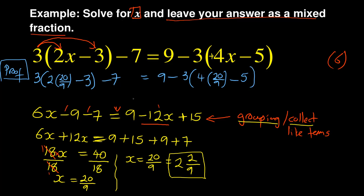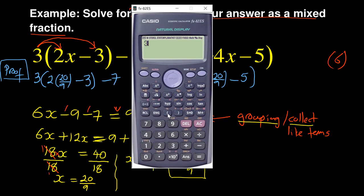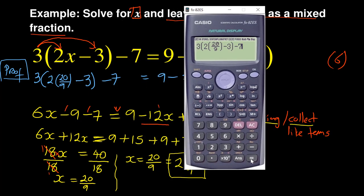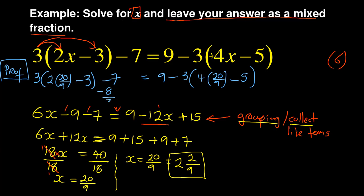What am I doing? I'm trying to test if the value of x that I got is the correct one. So when I do that, I have to start with the left hand side and calculate it. I've got 3 bracket 2, there is another bracket, fraction 20 over 9, close that bracket. And then I've got minus 3 and close the second bracket and it's minus 7. You can see that I'm getting minus 8 over 3. If my answer is correct, I must also get minus 8 over 3 on the right hand side.